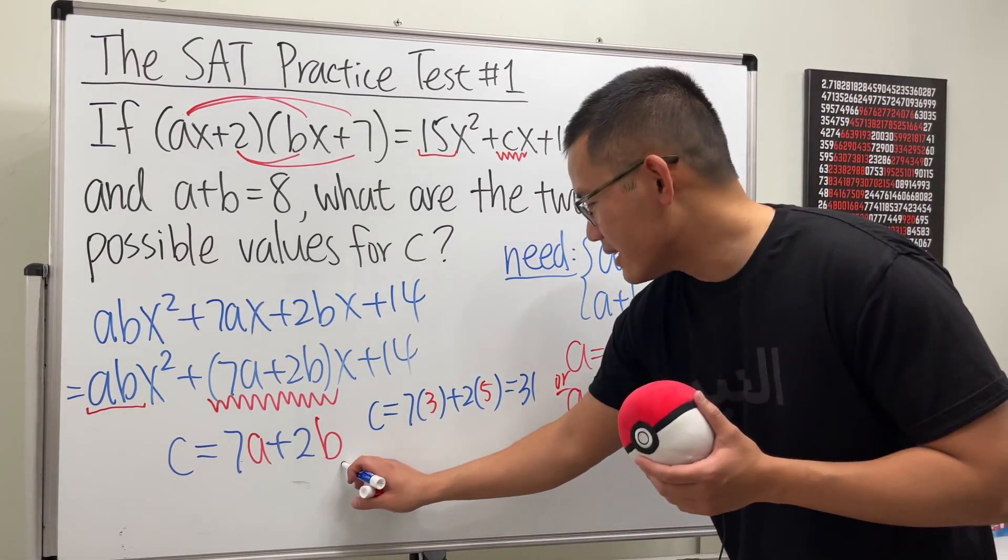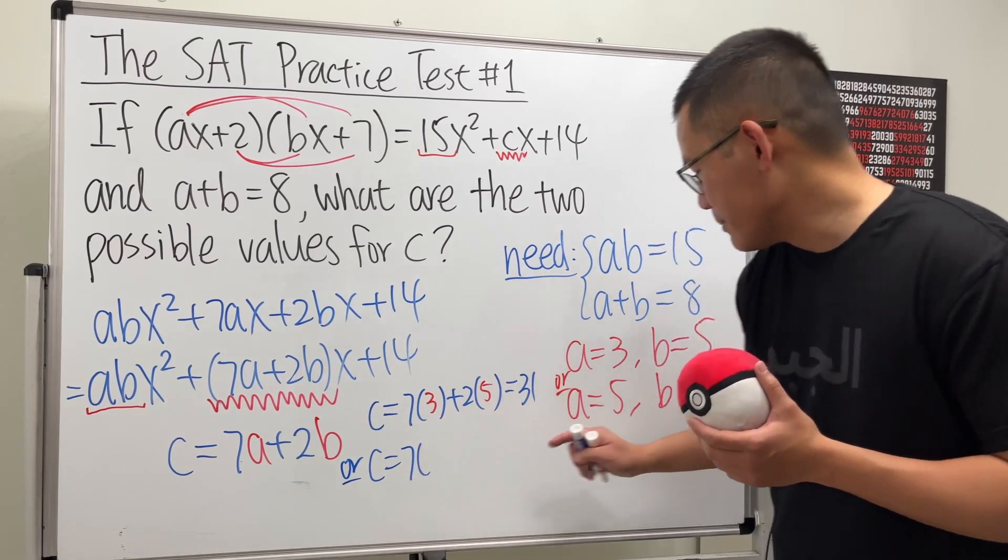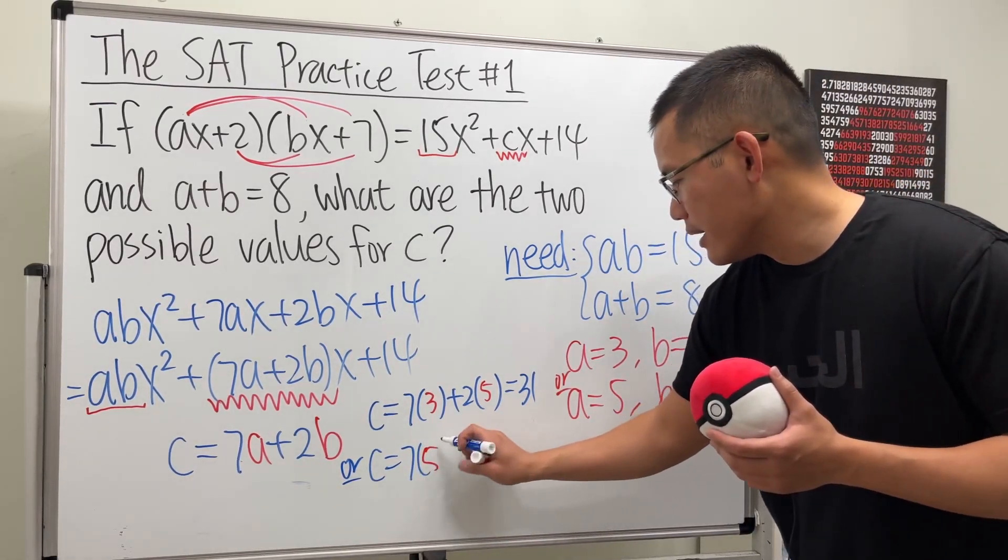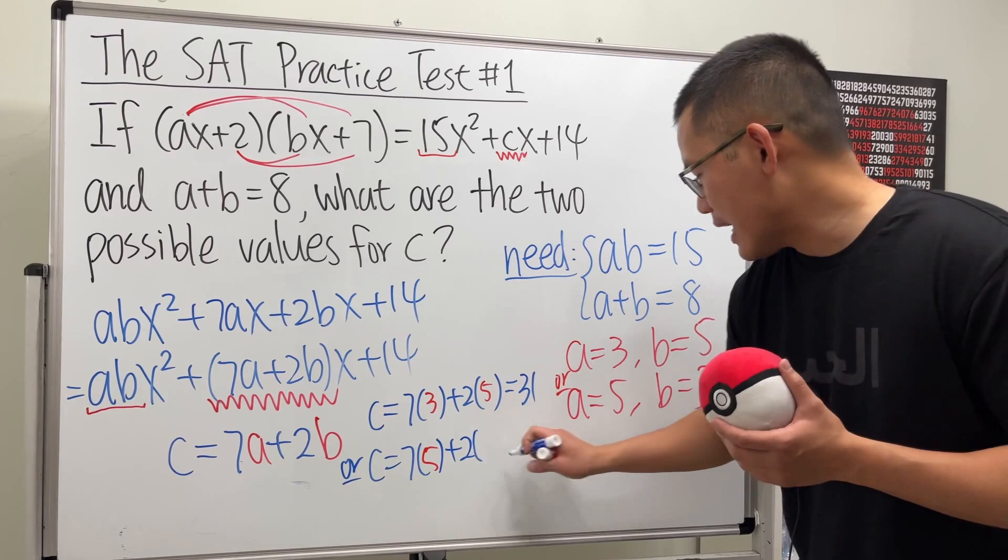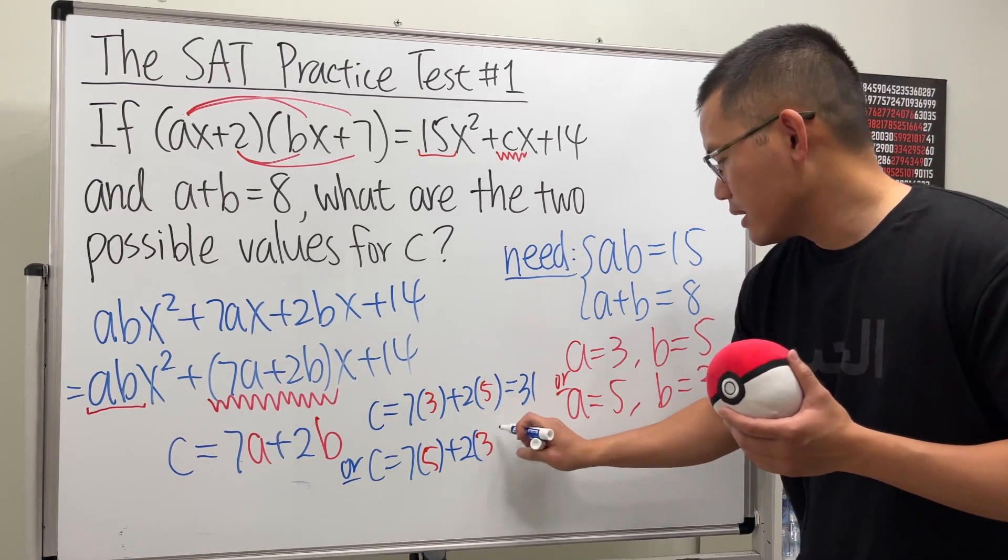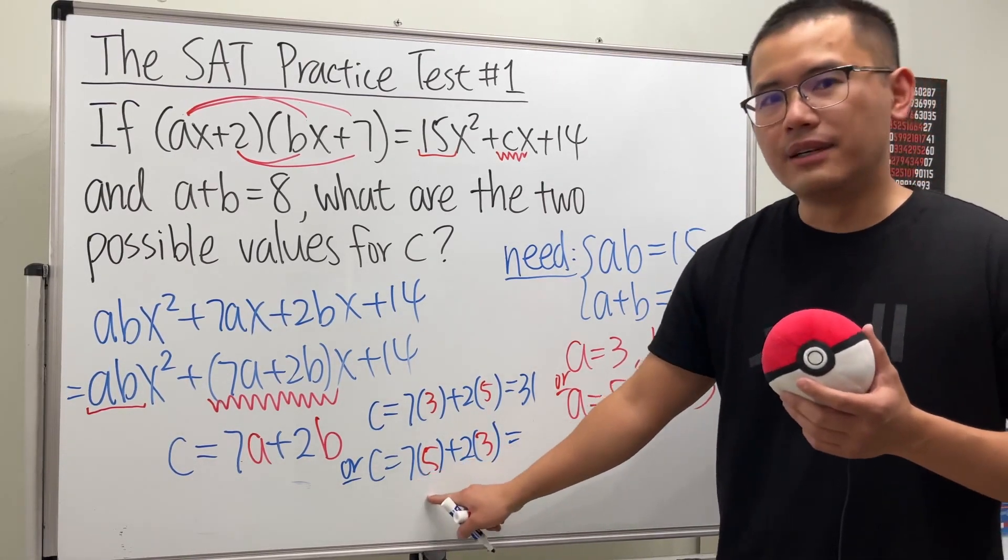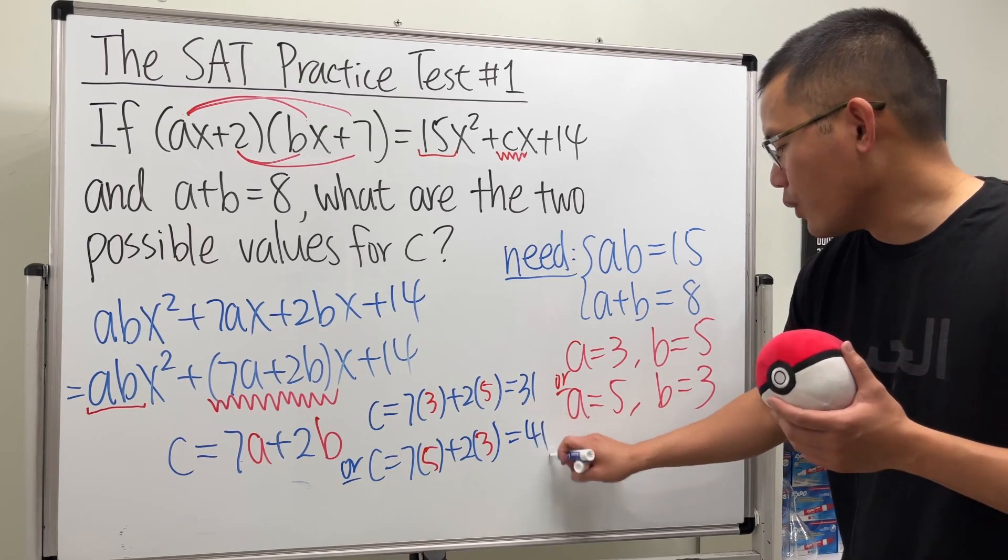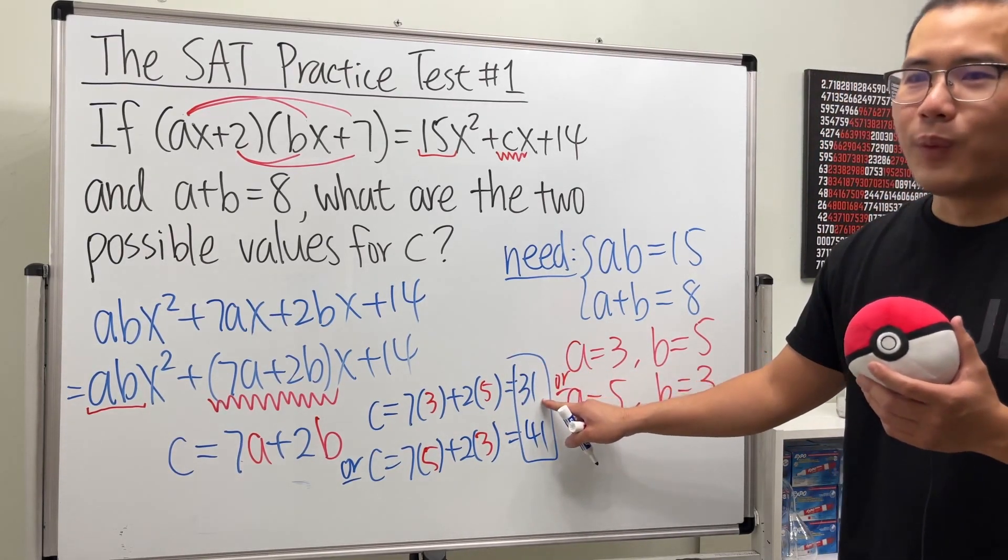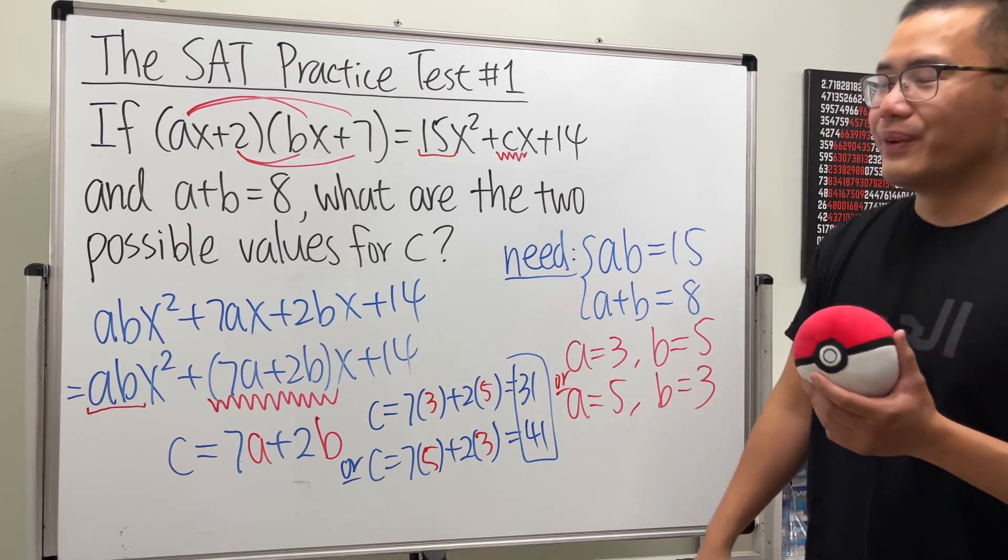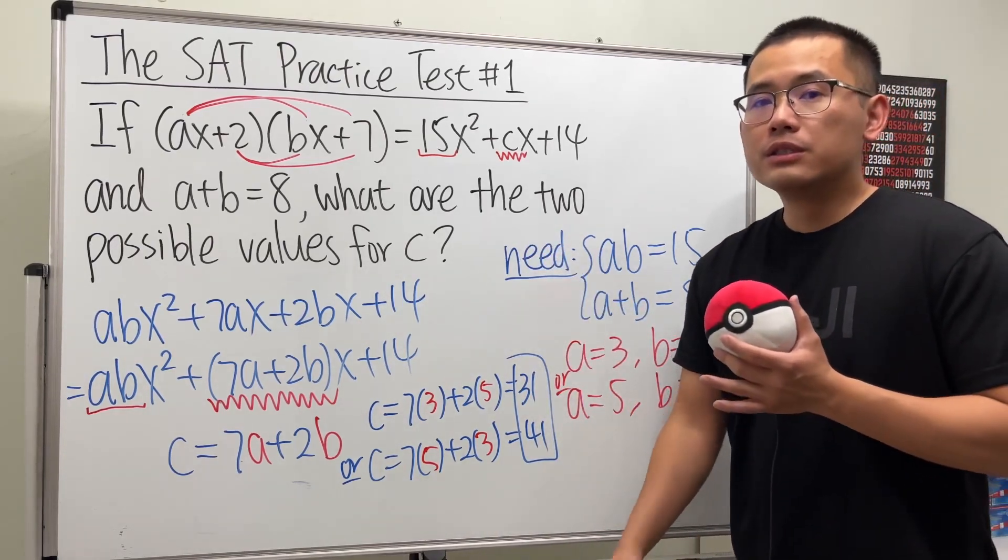And the other answer, again, let's put down the work. c equals 7 times 5 and then plus 2 times 3. That's 35 plus 6. All together, we get 41. So, ta-da! We have either 31 or 41 for the answer for c. So that's it.